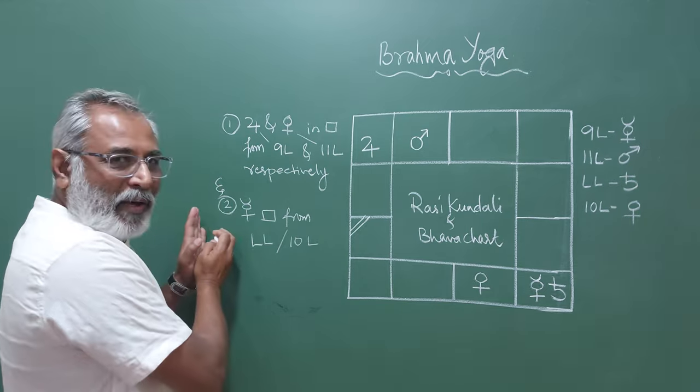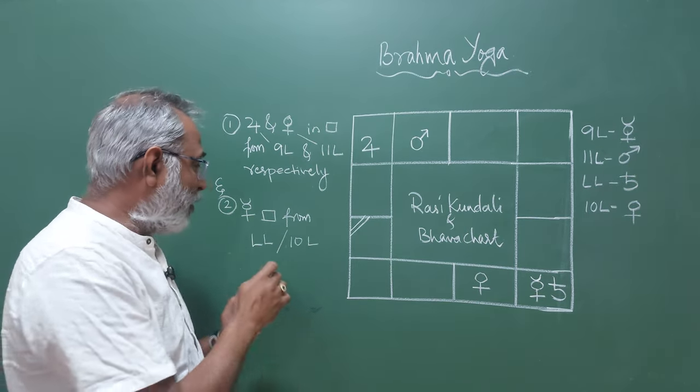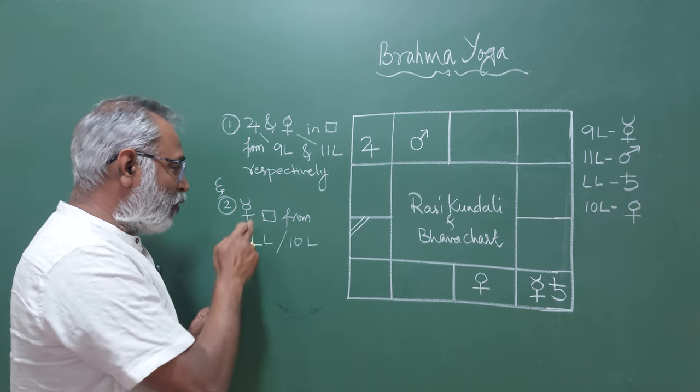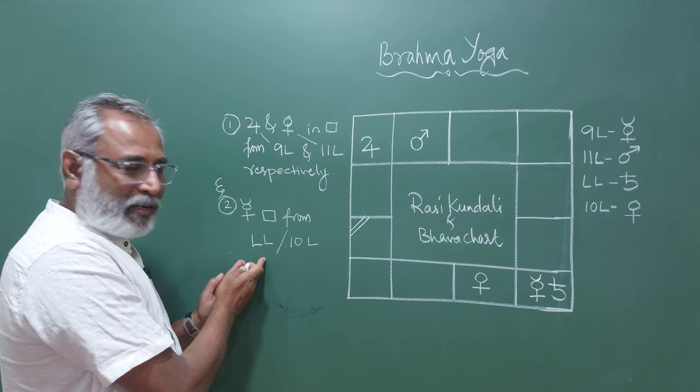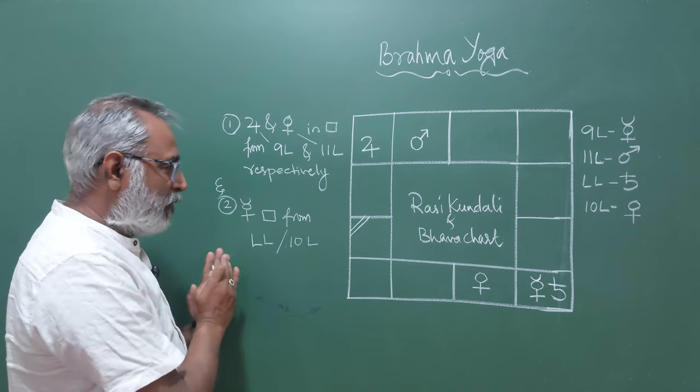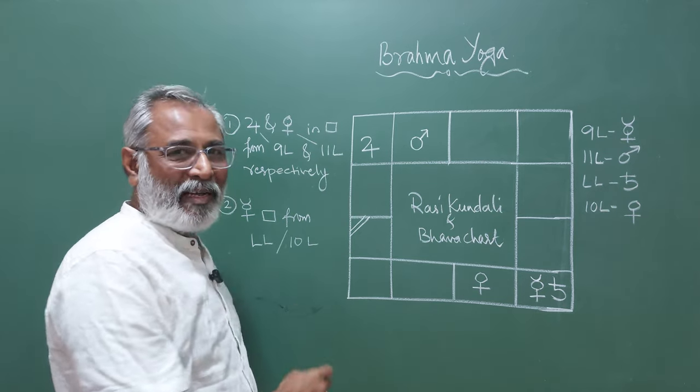And second part is that Mercury, individually Mercury has to be in quadrant from the Lagna Lord that is the ascendant Lord or the tenth Lord. So let us take this particular example.